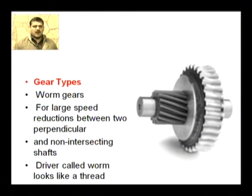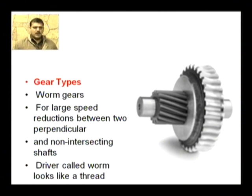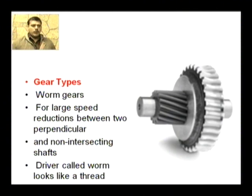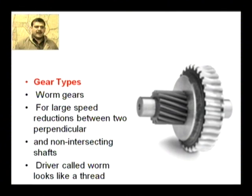The next type of gear is the worm gear. Worm gears are used for large speed reduction between two perpendicular and non-intersecting shafts. The driver is called a worm and looks like a thread. Worm gears are used to transmit power between two perpendicular, non-intersecting shafts.